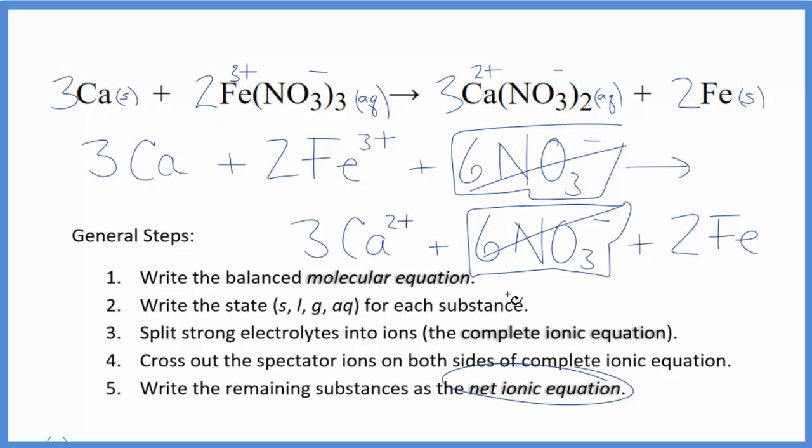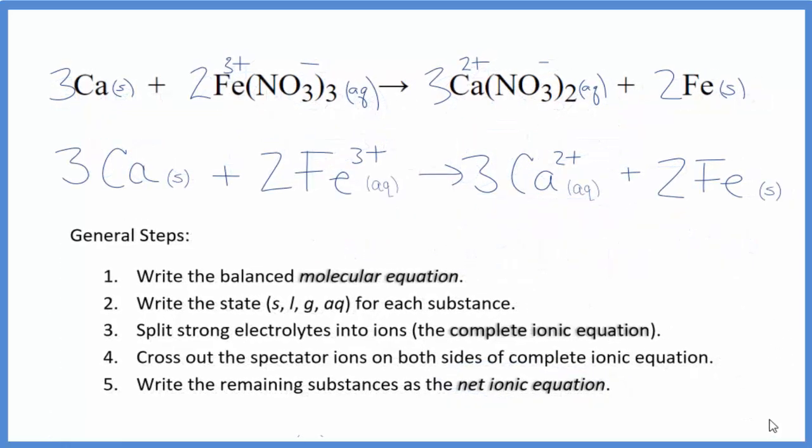Let me clean it up. I'll write the states. We'll have our net ionic equation. And this is the balanced net ionic equation for calcium plus iron(III) nitrate. You'll notice that the charge is balanced. I have two times three plus. That's six plus on the reactant side, three times two plus here. That gives us six plus. So charge is the same on both sides. And if you count the atoms up, they're balanced as well.